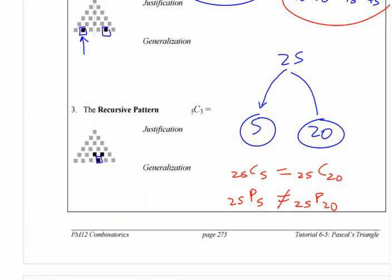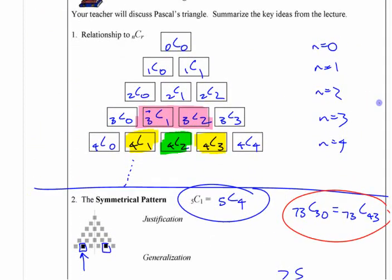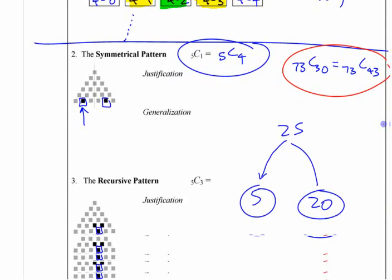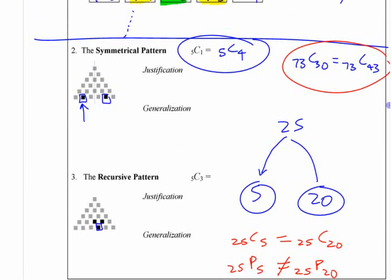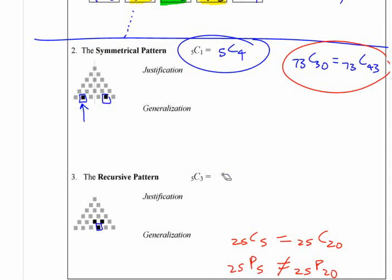If you made Pascal's triangle with permutations, it doesn't look like a symmetric triangle. If you want to generalize this, this is where people start to moan and groan and cry because they don't like it with variables for some reason.